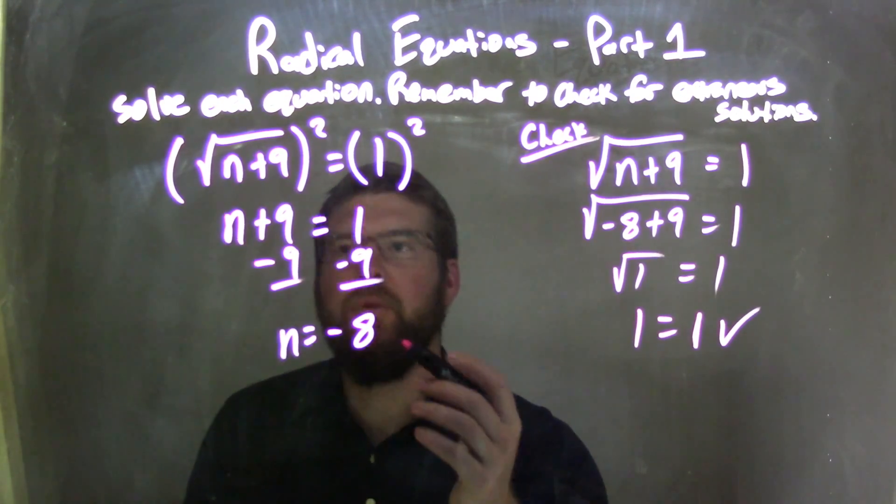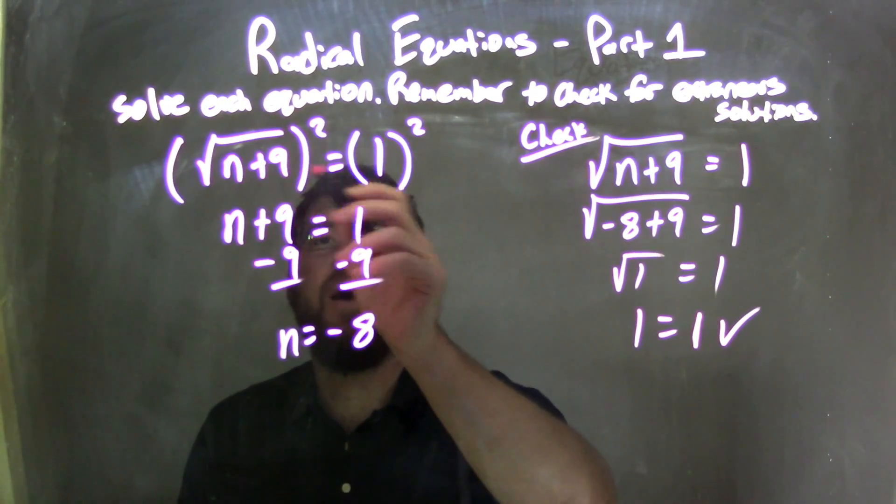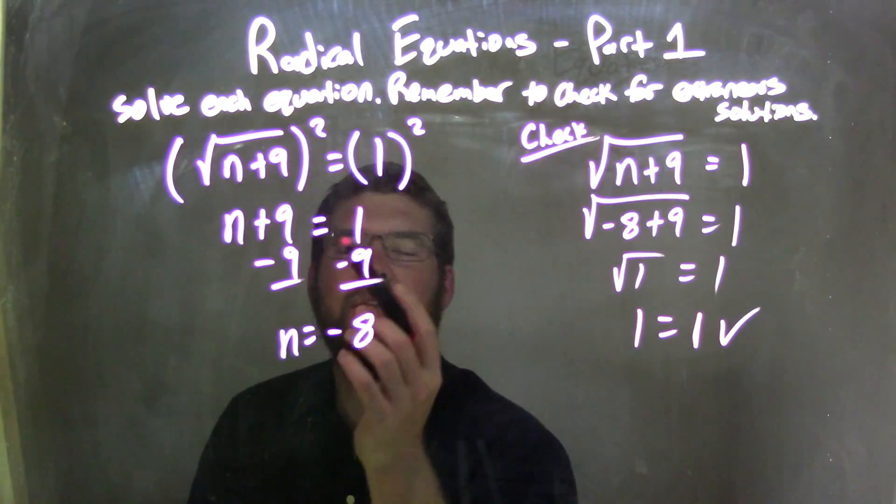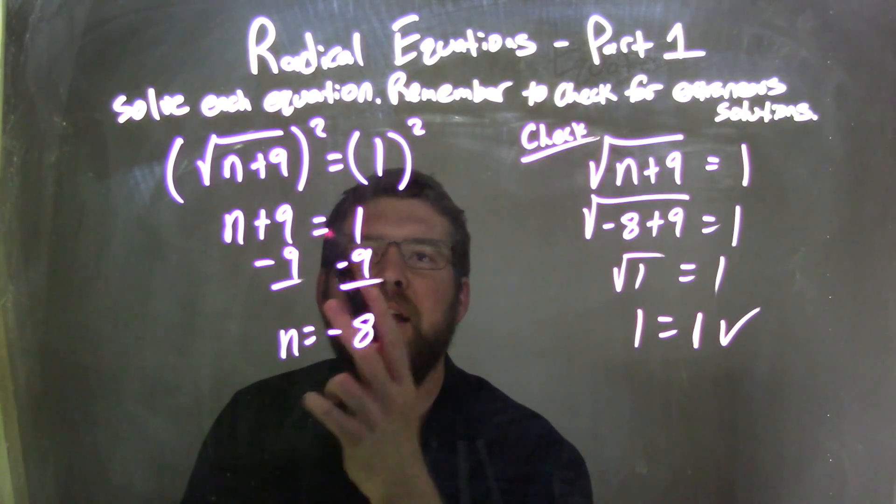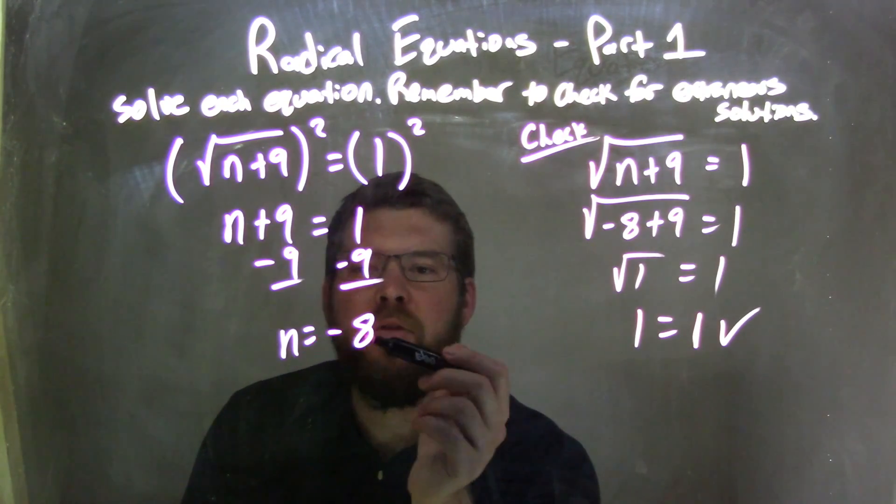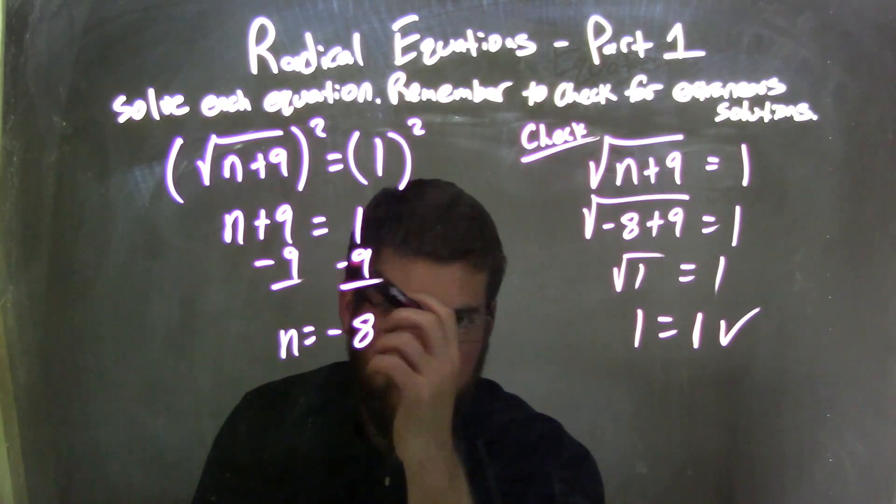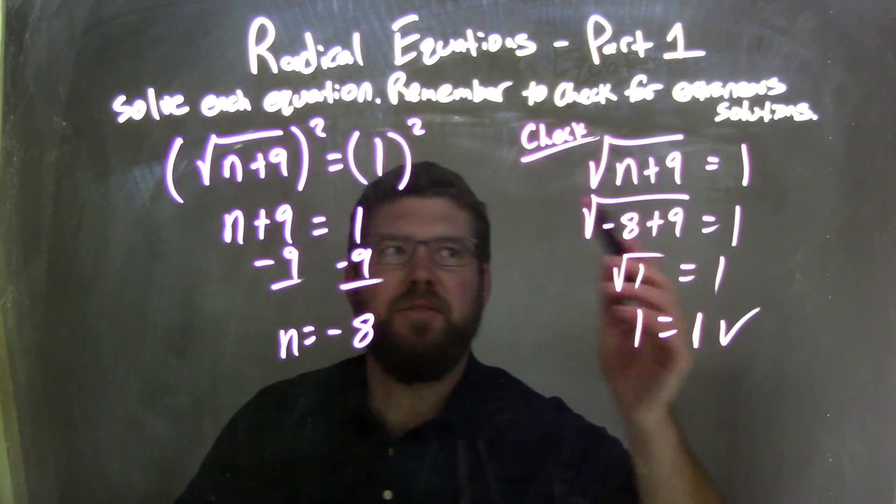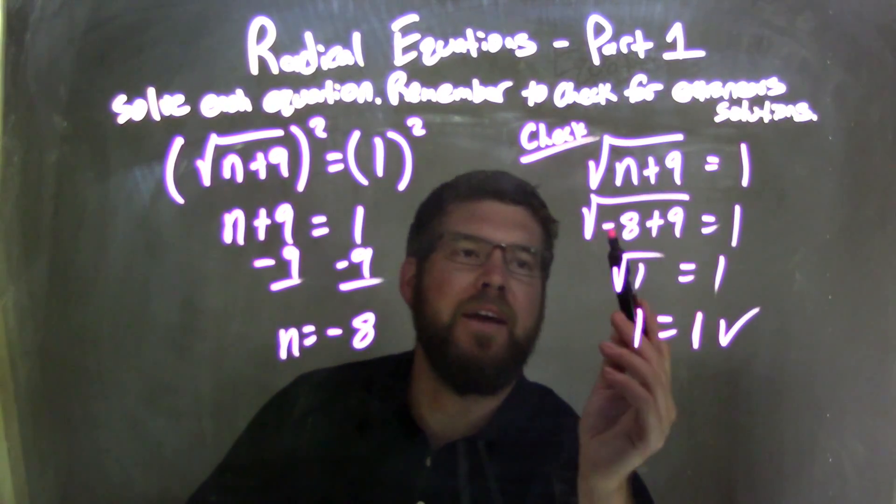Let's recap. We're given the square root of n plus 9 equals 1. I squared both sides to eliminate the square root, leaving me with n plus 9 equals 1 squared, which is just 1. Subtract 9 from both sides, giving me n equals negative 8. From there, I had to check, so I rewrote my equation and plugged negative 8 in for n.